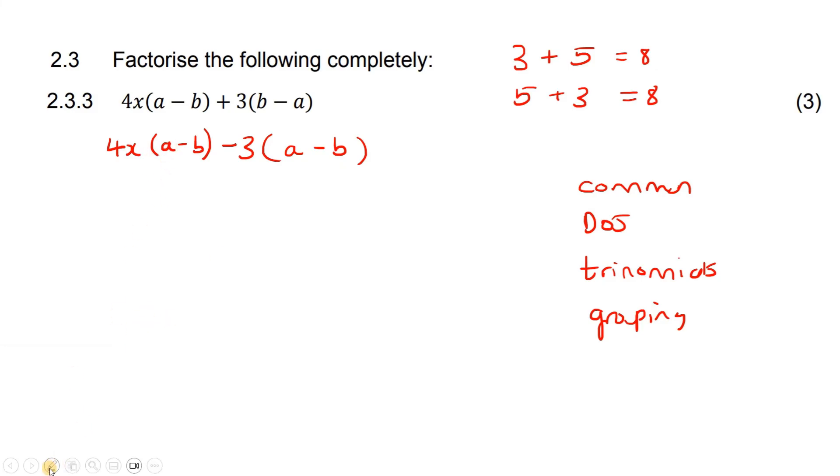Now, the reason we did that is because now we have these two being exactly the same. So now it's taking out a common factor. The common factor is (a-b). In the first part, we still have 4x left over. In the second part, we have -3. And that's our answer. We can't go any further; there's nothing more you could do. And so that's it.